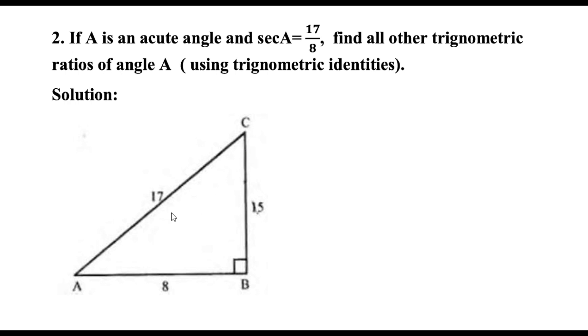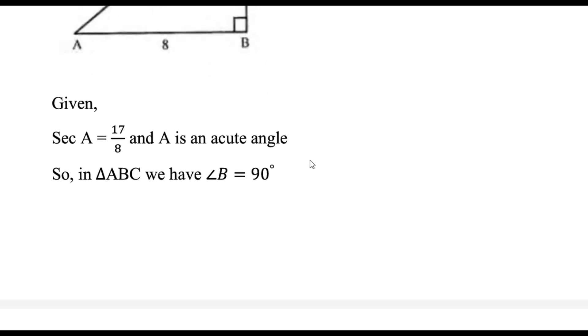The hypotenuse will be 17 and base will be 8. So sec A is 17 by 8 as given. A is an acute angle, that is less than 90 degrees.